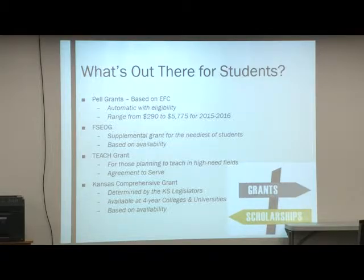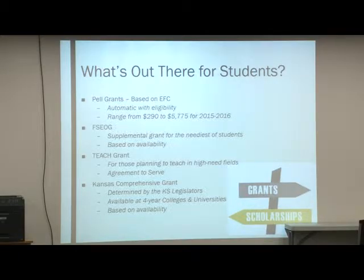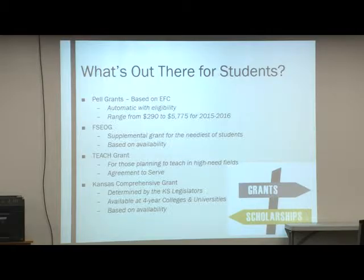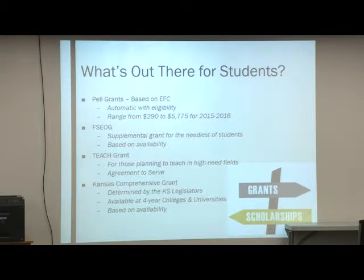What's out there in the way of federal financial aid? Pell Grants — one of the most common sources — is a grant based on the expected family contribution. A student has to have need in order to be eligible, and it's awarded automatically. For the current year, amounts range from $290 to $5,775 for the year. The lower a student's expected family contribution, the greater their Pell Grant is going to be.